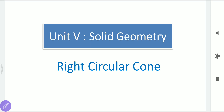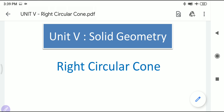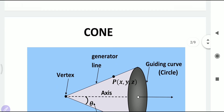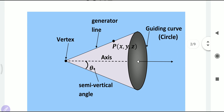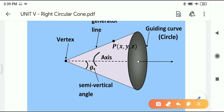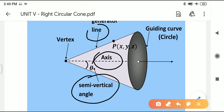Today we are going to see the next topic from unit number five: right circular cone. The right circular cone is generated by two lines — one is called the axis and the other is called the generator line. When we rotate the generator line about the axis by keeping a fixed angle, called the semi-vertical angle, the shape we get is called a right circular cone.